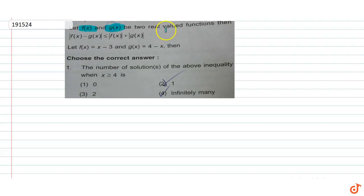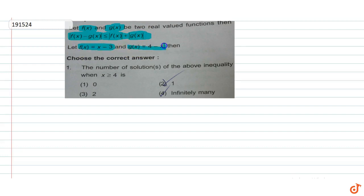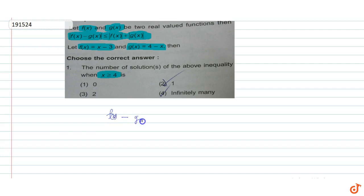Let f(x) and g(x) be two real-valued functions. The inequality given is |f(x) - g(x)| ≤ |f(x)| + |g(x)|, where f(x) = x - 3 and g(x) = 4 - x. We need to find the number of solutions of this inequality for x ≥ 4.